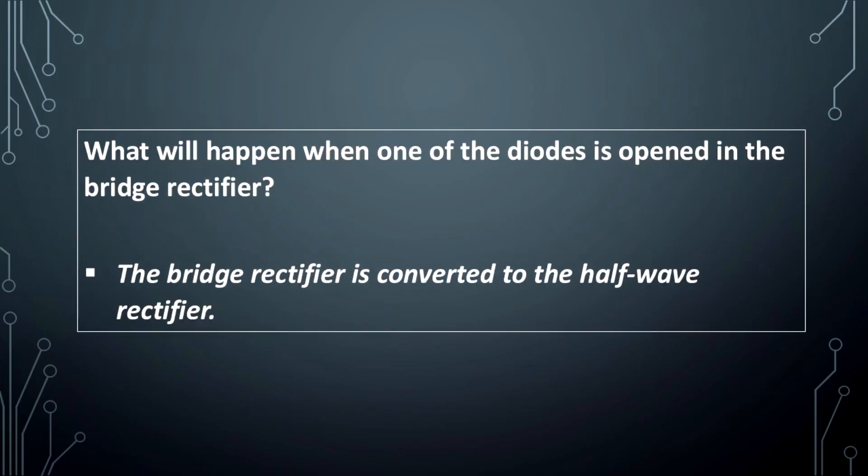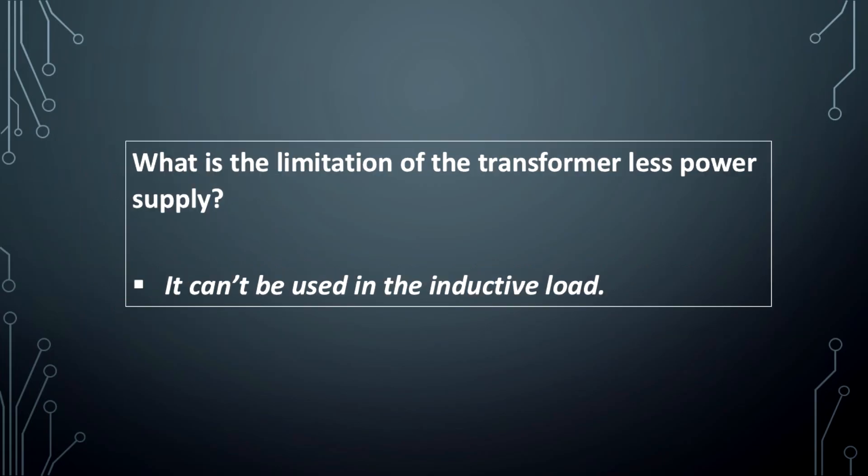What will happen when one of the diodes is opened in the bridge rectifier? The bridge rectifier is converted to a half-wave rectifier. What is the limitation of the transformerless power supply? It cannot be used with an inductive load.